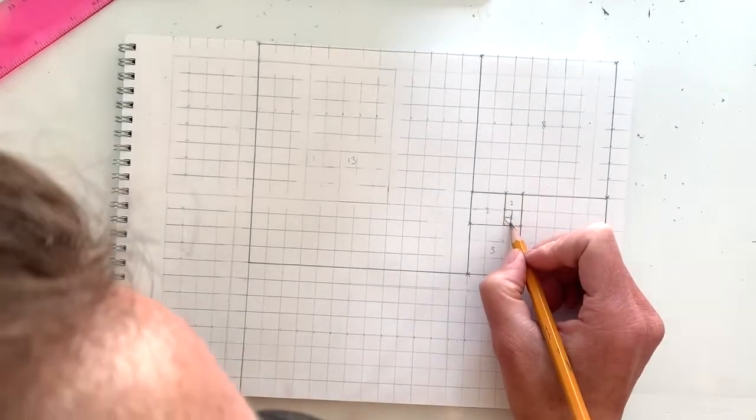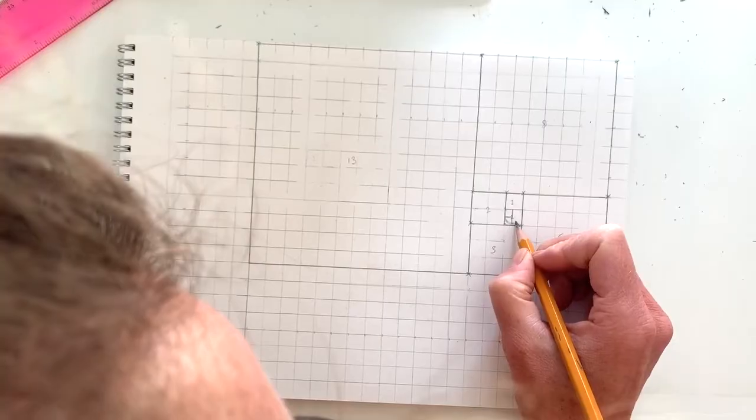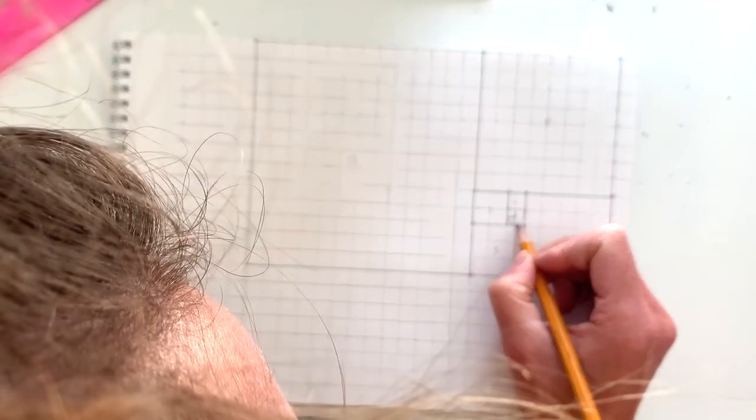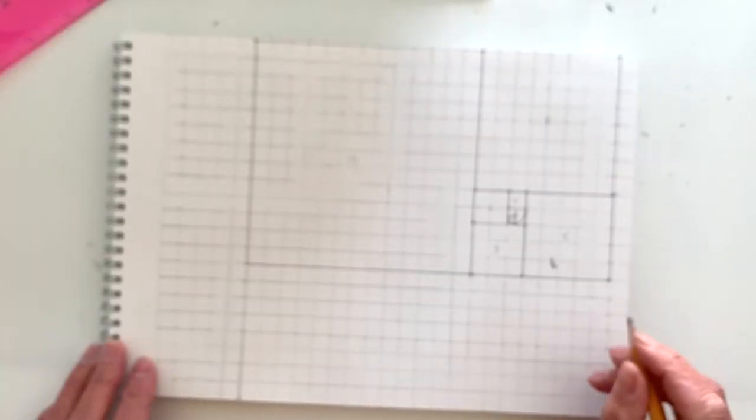Technically the spiral should start even smaller than your first box, so if you divide your first box in half and then the left half into half again, you can start the beginning of your spiral.